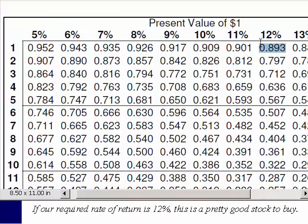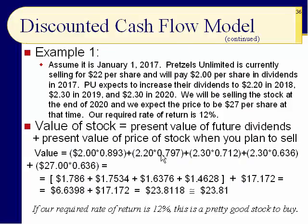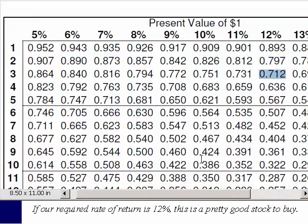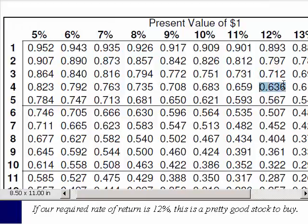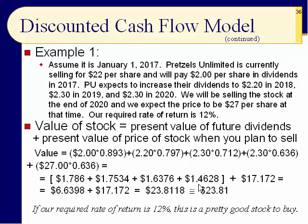It's easy — once you do it a few times it's just plugging numbers in. We multiply the $2.20 we get in 2018 by 0.797, which is worth a little over $1.75. The $2.30 in 2019 is multiplied by the PVM for three years, 0.712, giving almost $1.64. Then the $2.30 in 2020 is multiplied by the PVM for year four, 0.636, which equals about $1.46.